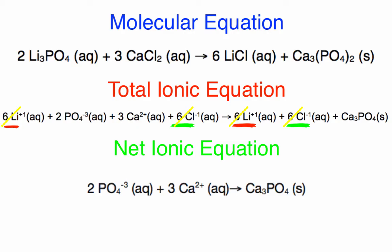So that is how you write the molecular, total, and net ionic equations from a chemical reaction — in this case, from a double displacement precipitation reaction.